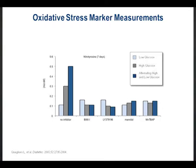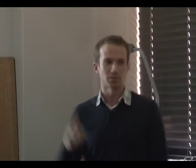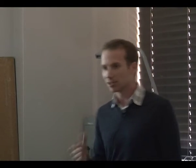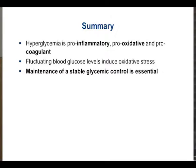A very important point I cannot stress enough: if you have to choose between low glucose, high glucose, or alternating high and low glucose levels, you would rather have either of the first two than the last one. Looking at oxidative stress markers, alternating between high and low glucose produces much higher oxidative stress. In the inpatient setting with sepsis or post-operative patients, the last thing you want is fluctuation between high and low sugars. In summary, hypoglycemia is pro-inflammatory, pro-oxidative, and pro-coagulant, and fluctuating blood glucose levels induce oxidative stress — we want to maintain a stable glycemic environment.